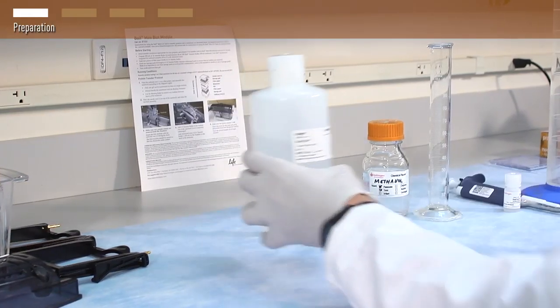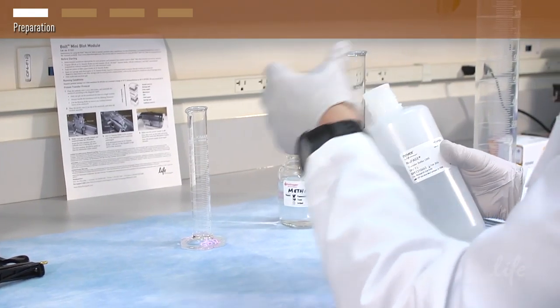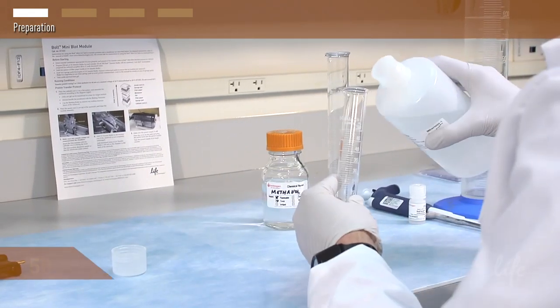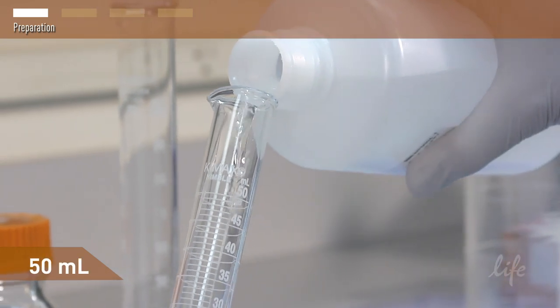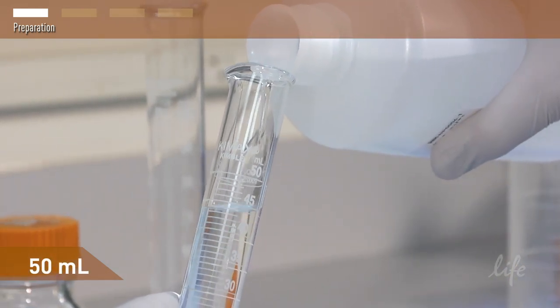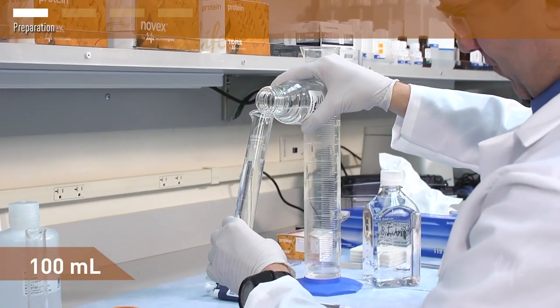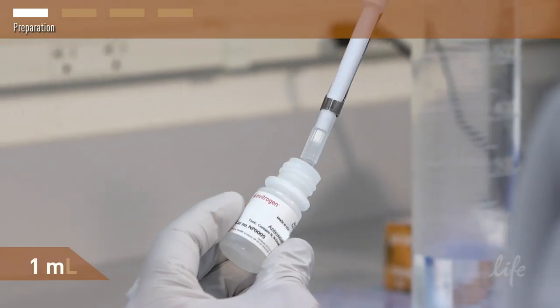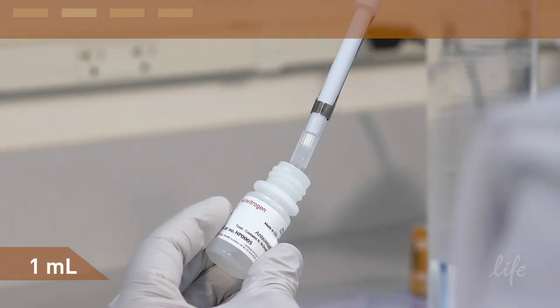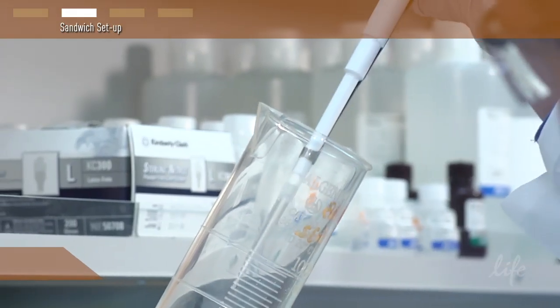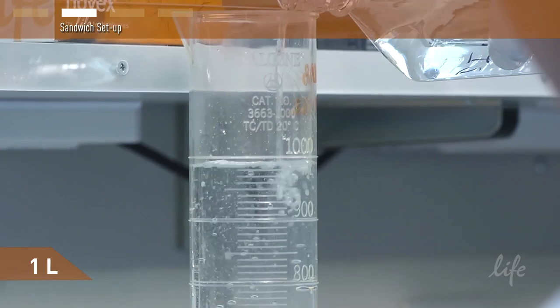Approximately 250 milliliters of transfer buffer is required for each transfer. Prepare transfer buffer by adding 50 milliliters of 20x Bolt transfer buffer, 100 milliliters of methanol, and one milliliter of antioxidant, bringing up the total volume to one liter with deionized water.